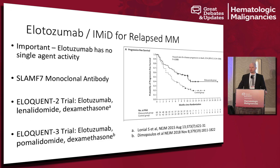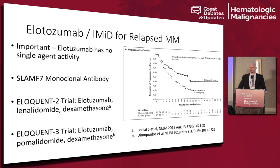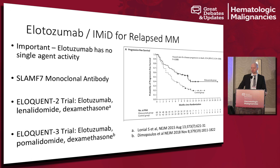Elotuzumab is another drug with strong activity for relapsed multiple myeloma. Importantly, it has no single-agent activity and only shows a signal when combined with an immunomodulatory agent. It is a SLAMF7 monoclonal antibody, studied with two partners — lenalidomide and pomalidomide — in the ELOQUENT-2 and -3 trials. The data from the ELOQUENT-3 trial, despite enrolling patients who were both IMID and proteasome inhibitor refractory, showed a dramatic improvement in progression-free survival. We tend to underutilize this drug, so it's important to remember to use it in patients that are relapsing.